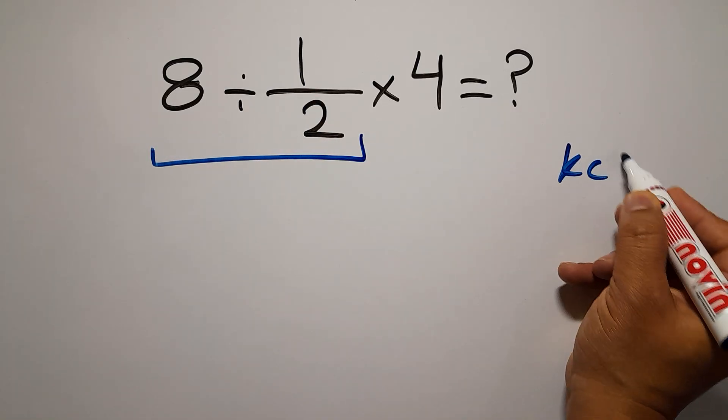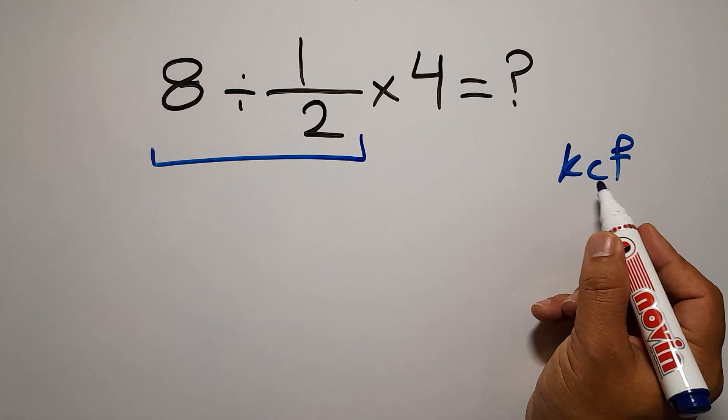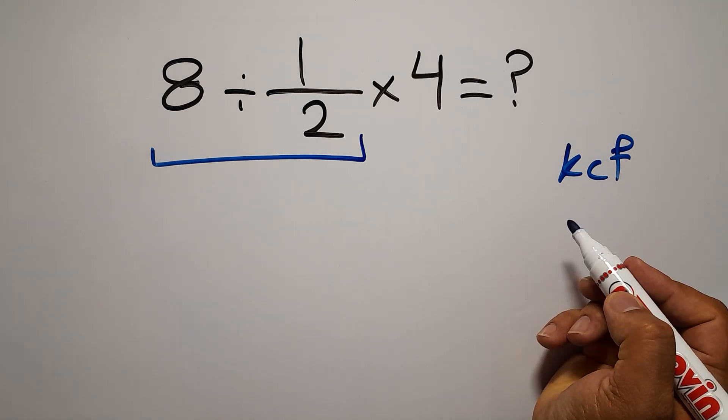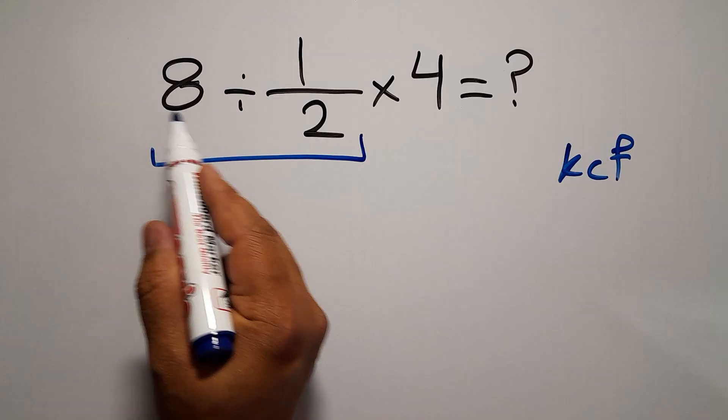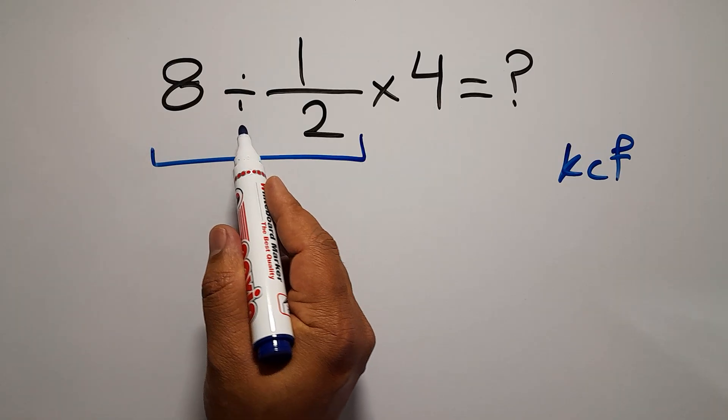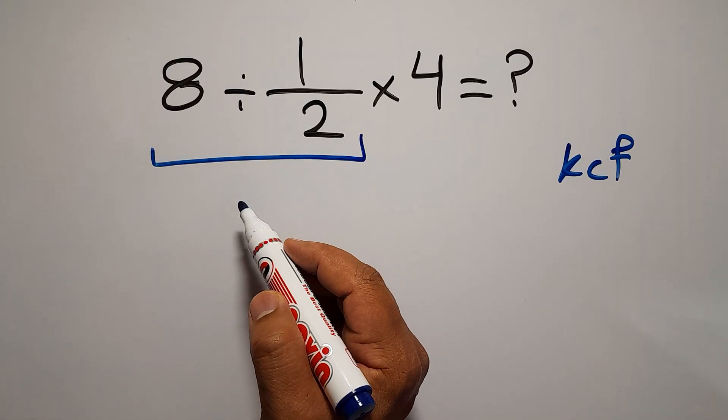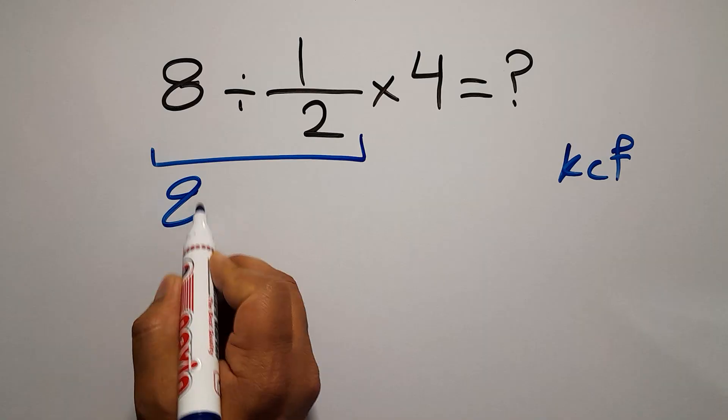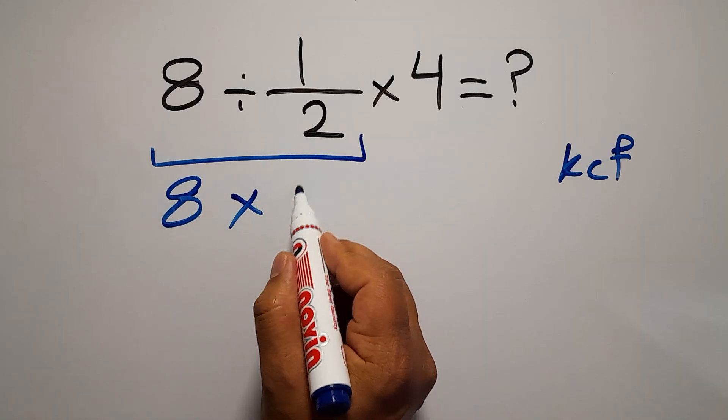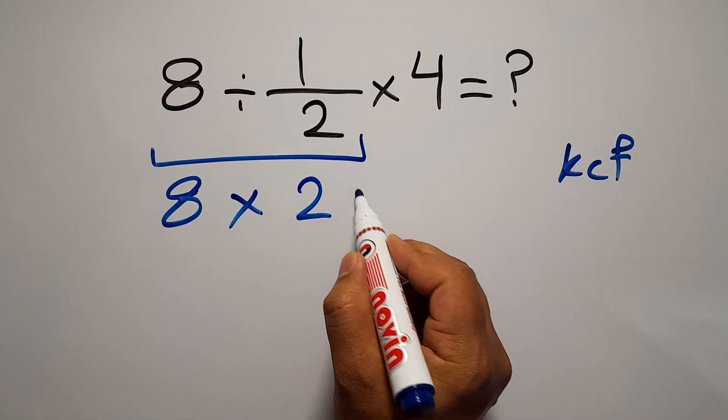8 divided by 1 over 2. According to the KCF rule: K stands for keep, C stands for change, and F stands for flip. Keep the first fraction, change the division to multiplication, and flip the second fraction. We can write 8 times 2 then times 4.